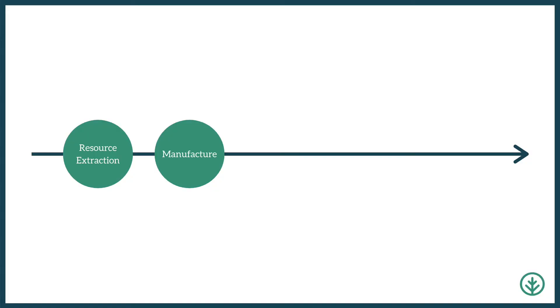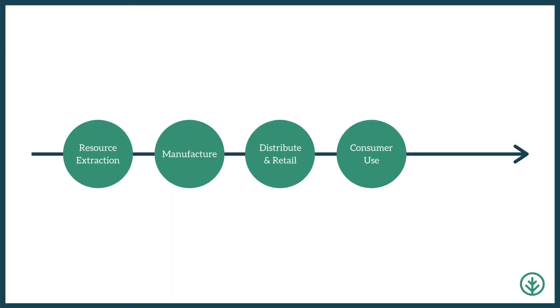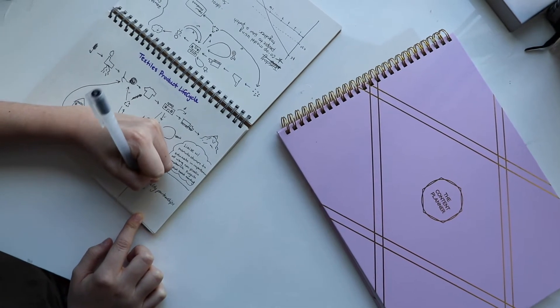The third step is distribution or retail. This is often the only time that consumers interact with businesses, because in a linear economy we purchase to own — we don't often rent or lease products. The fourth step is customer use. This step can show either high or low utilization depending on the product. For example, a high utilization product would be something like a notebook used every day, whereas low utilization would be a seasonal product or something you only use once or twice a year.